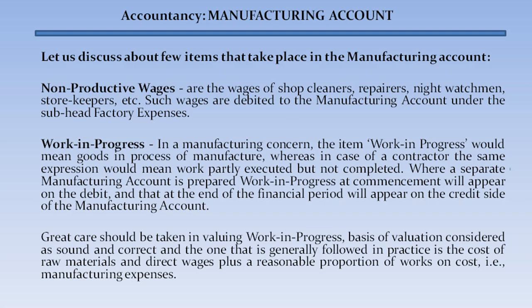Non-productive wages are the wages of shop cleaners, repairers, night watchmen, store keepers, etc. Such wages are debited to the manufacturing account under the sub-head factory expenses. Work in progress: in a manufacturing concern, work in progress means goods in process of manufacture, whereas for a contractor it means work partly executed but not completed. Where a separate manufacturing account is prepared, work in progress at commencement appears on the debit side and at the end of the financial period appears on the credit side. The basis of valuation considered sound in practice is the cost of raw materials and direct wages plus a reasonable proportion of works overhead, that is manufacturing expenses.